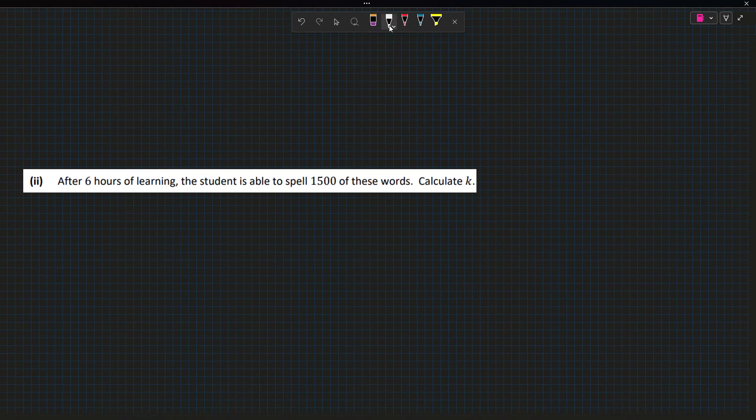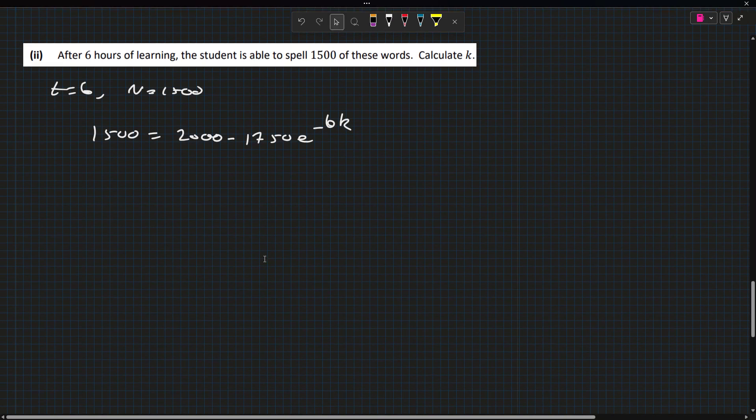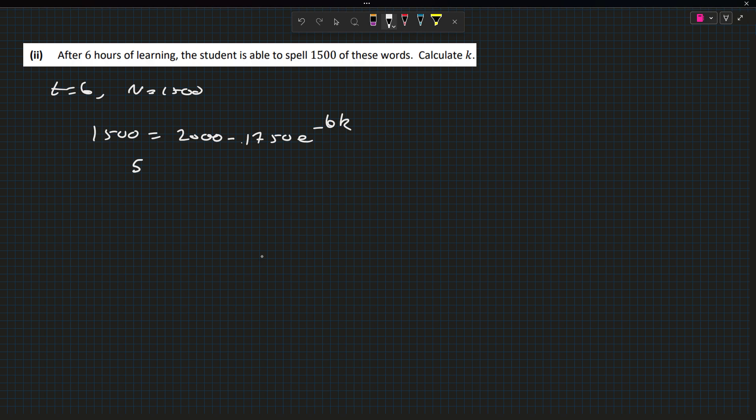After six hours, it's about 1500, calculate k. So t equals 6, n is equal to 1500. So 1500 is 2000 minus 1750 e to the minus 6k. Now here we're going to get 500 over 1750. Because when we take that away, we get minus 500 divided by the minus 1750. It's going to flip the signs. So we're going to take the natural log and divide by six. So k is the natural log of 500 over 1750 over 6. This gives k equals 0.2.